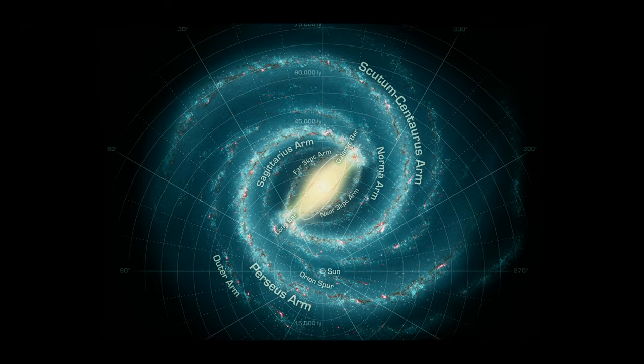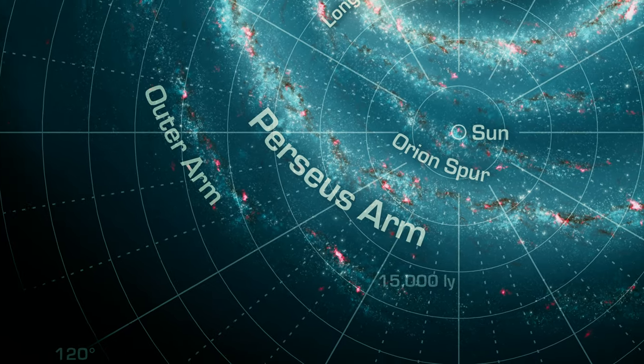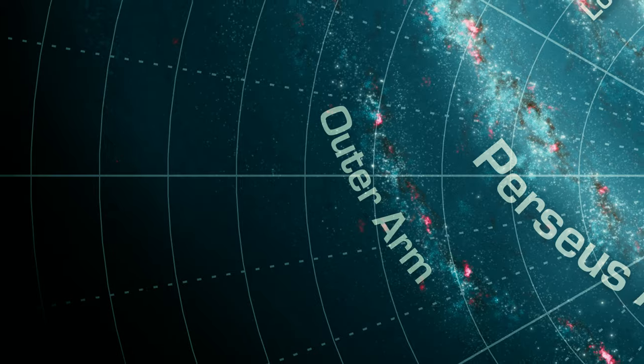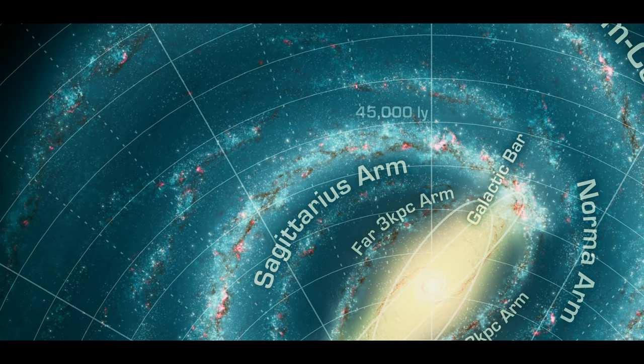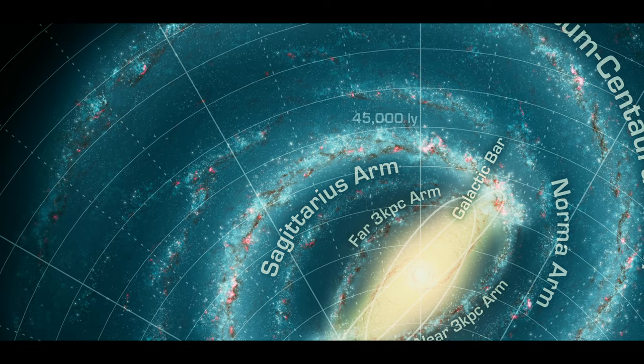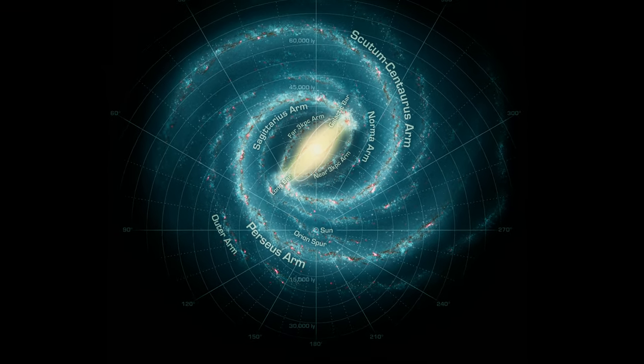The Milky Way has been said to have four major spiral arms: the Perseus, the Outer, the Scutum Centaurus and the Carina Sagittarius arms. Other minor arms like the Orion and Cygnus have also been identified.